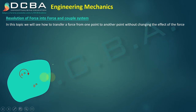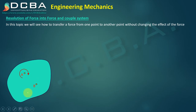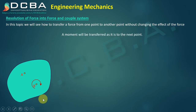Now, what if instead of a force we have a moment at point A? How do we transfer a moment from point A to point B? A moment has only a rotational effect, so a moment at point A is only going to cause rotation at point B. When we transfer it to point B, we do not have to do anything else but directly transfer it — a moment will be transferred as it is to the next point. We only need to consider the rotational effect of the moment.